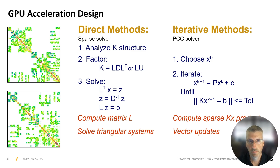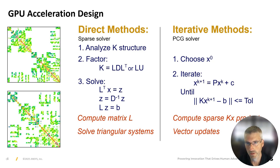When running mechanical simulations, customers have two main equation solvers to choose from: one direct method solver and one iterative method solver. Both of these solvers can take advantage of available GPU hardware to accelerate their calculations. Additionally, when running modal or buckling analyses, various eigensolvers based on these equation solvers can also be accelerated by the GPU hardware — including Block Lanczos, PCG Lanczos, unsymmetric, damp subspace, and more.